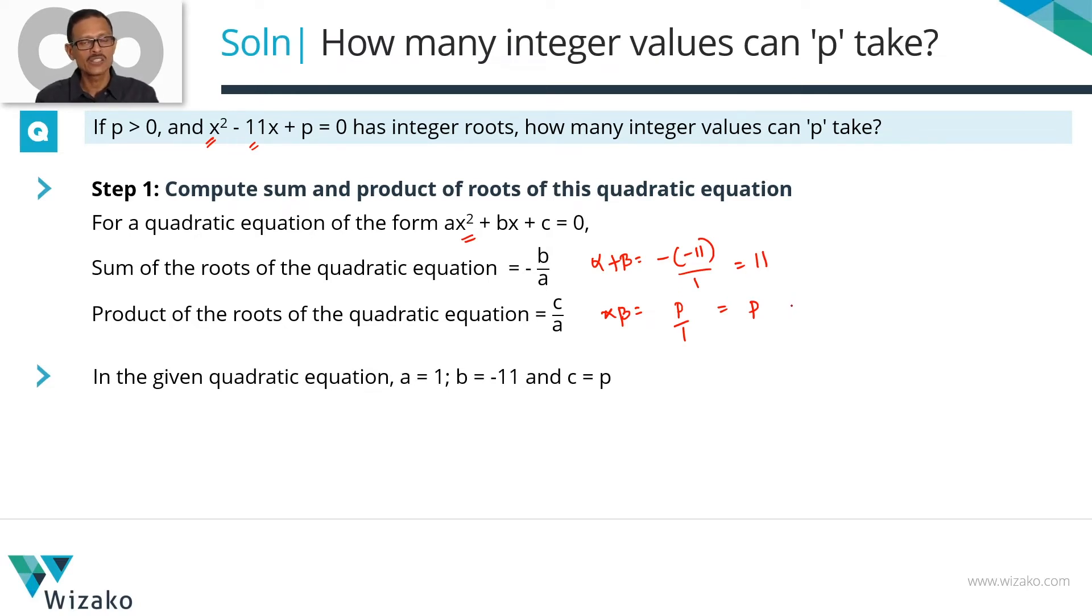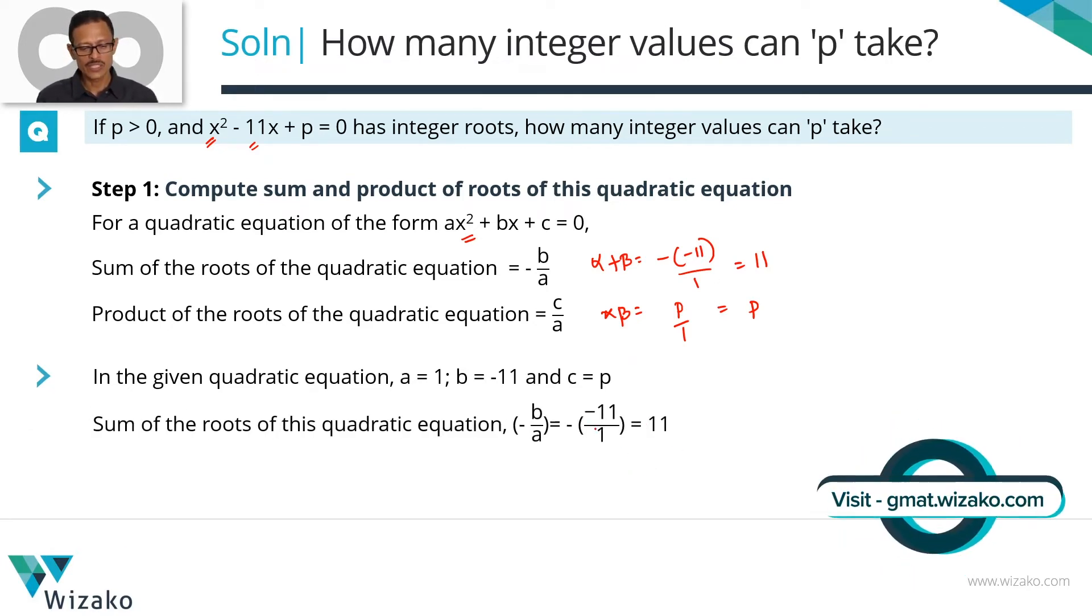So we can list down different values that alpha and beta can take such that its sum is equal to 11, and compute the number of values that the product alpha beta can take. Quickly recap these two steps: the sum of the roots equals -b/a which equals 11, product of the roots is equal to p which is c/a.